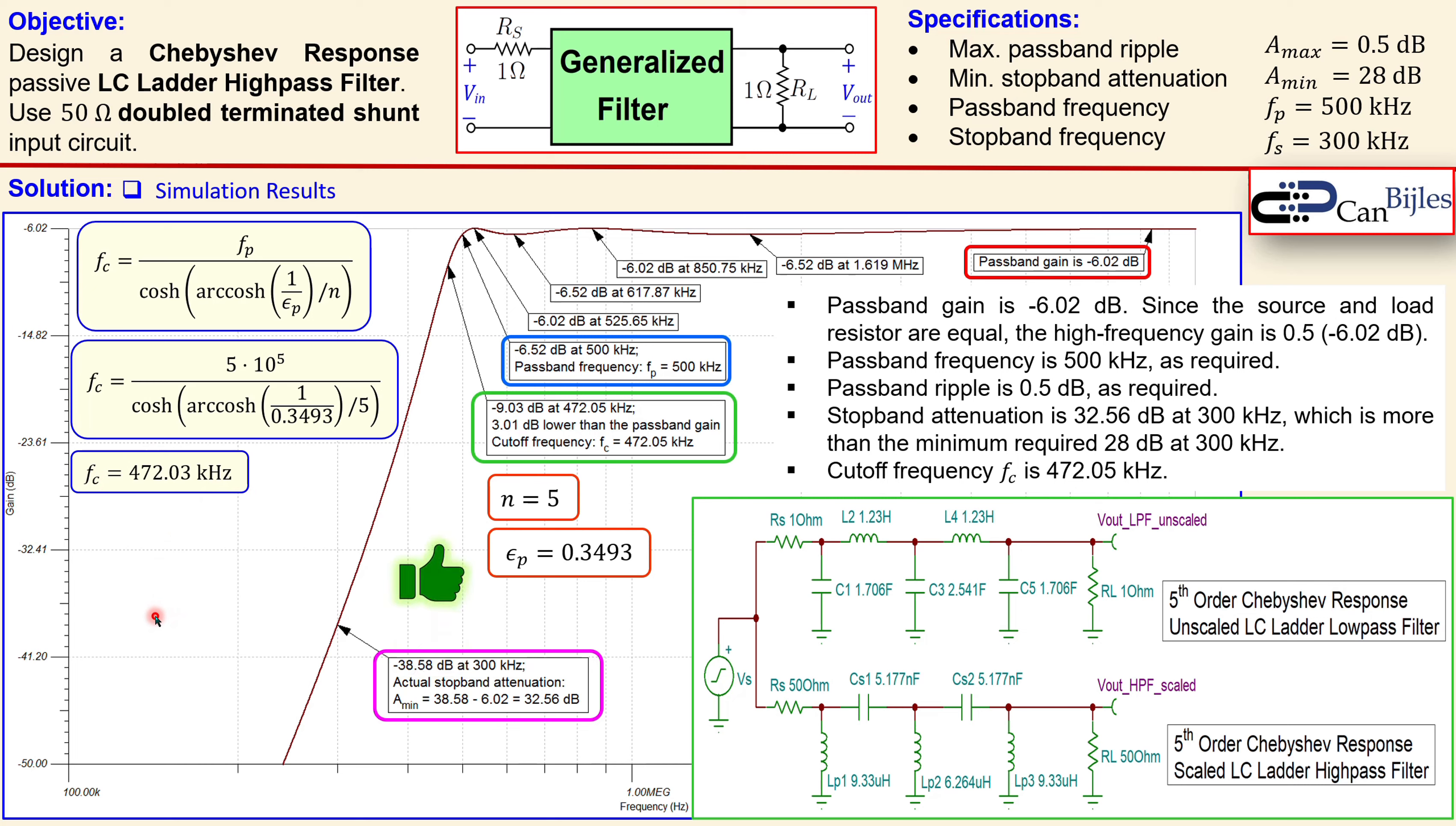So we can say every specification given here is met and also we have proved that the cutoff frequency is correct. This is our example number two concerning the Chebyshev response LC ladder circuit for our high pass filter using this 50 ohm double terminated shunt input circuit. If you have any questions or comments about this example, please let me know. I will try to answer them as soon as possible. See you next time in another video. Take care.